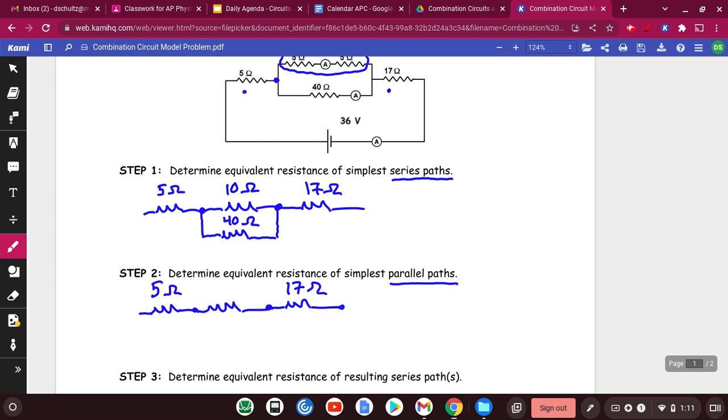So I have to use the reciprocal rule. I'm going to take my calculator and do 1 divided by 10 plus 1 divided by 40. I'm going to reciprocate that, and I get 8.